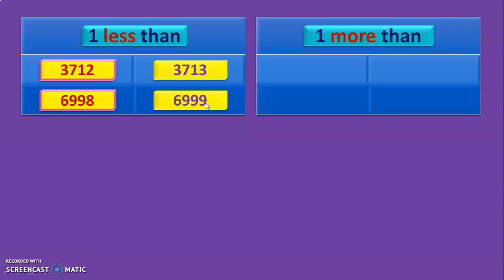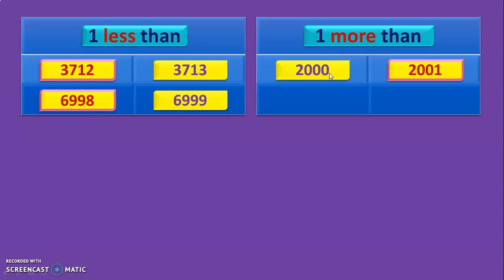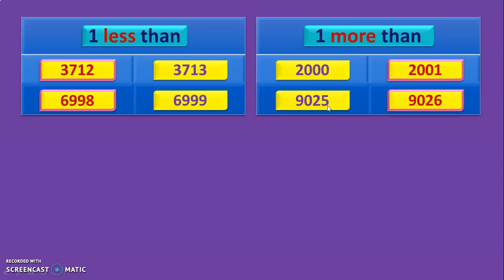Let us do 1 more than now. The example given here is 2,000. It is the same concept of looking at the 1s place, but the keyword here is 'more' which means we will have to add 1 to the 1s place. So 1 more than 2,000 is 2,001. Next example is 9,025 — 1 more than 9,025. What do we have in the 1s place? It is 5. What is 1 more than 5? It is 6. So 1 more than 9,025 is 9,026.